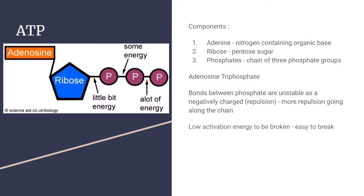This means that the phosphate bonds have a low activation energy to be broken, so these bonds can easily break. When these bonds are broken they release a considerable amount of energy, which is why ATP is our energy-containing molecule that we use for releasing energy.